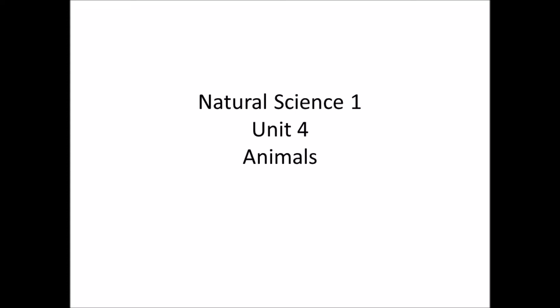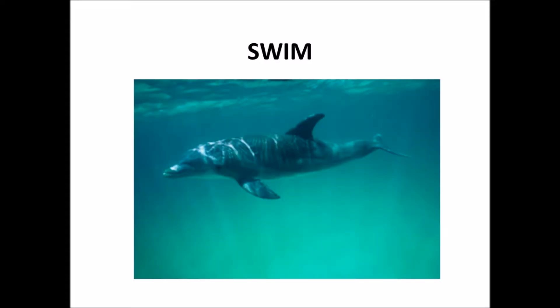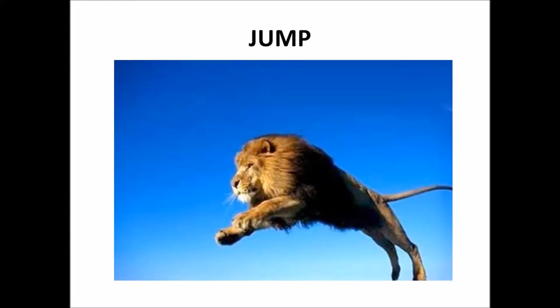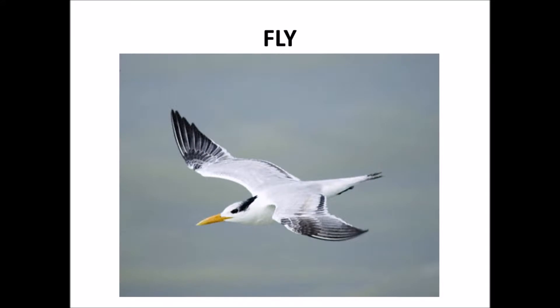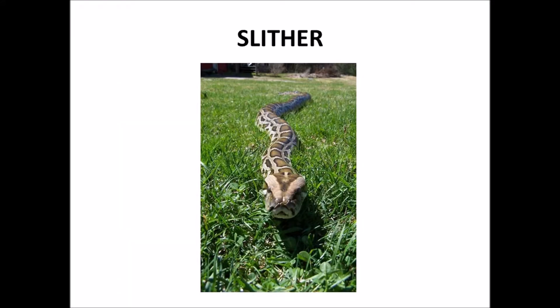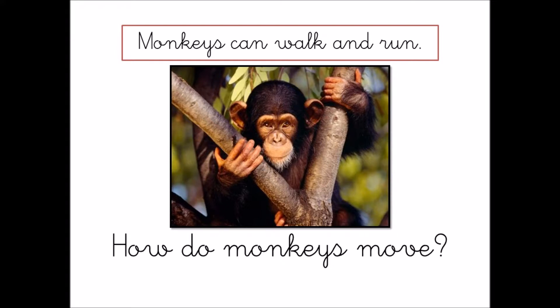Natural Science, Unit 4: Animals. How do animals move? Animals move in different ways. Swim, jump, climb, fly, slither, walk.